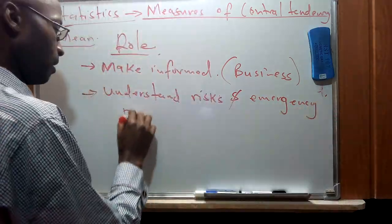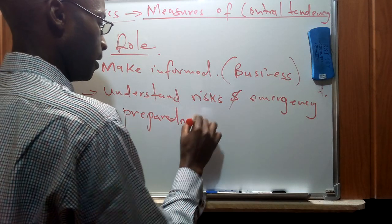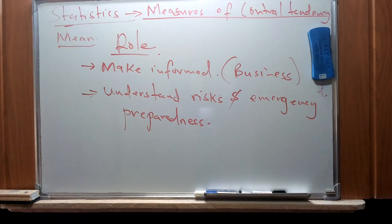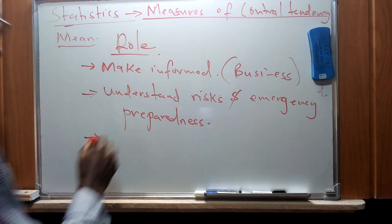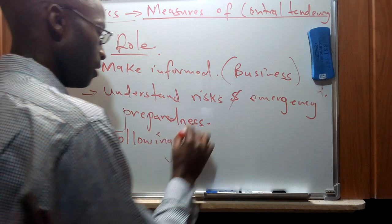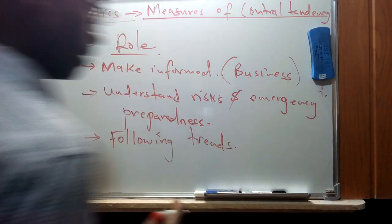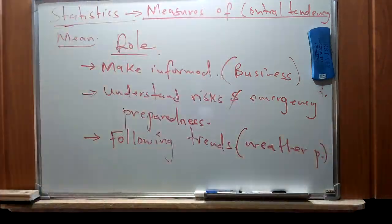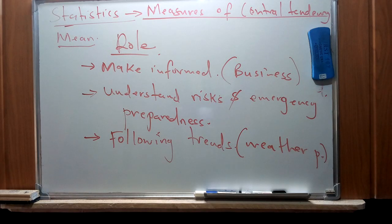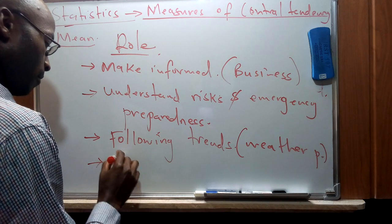Understanding risks and engaging emergency preparedness — we have to mitigate or handle the risks which come by. Statistics, if we take information from natural occurrences or phenomena like the weather, assists us in following trends. This will help us figure out how we can utilize this information for activities like agriculture.